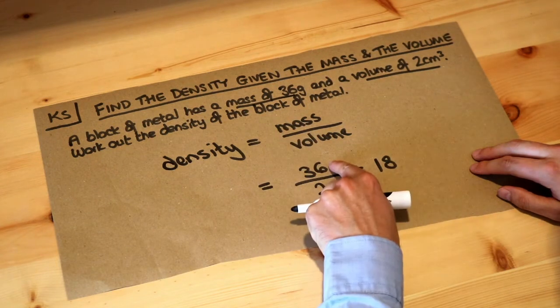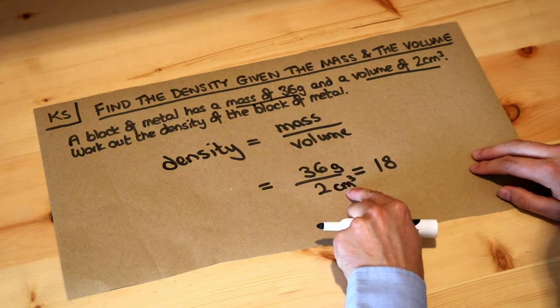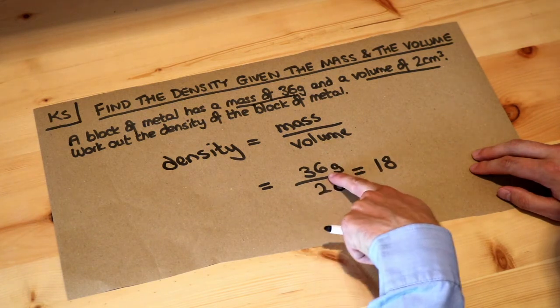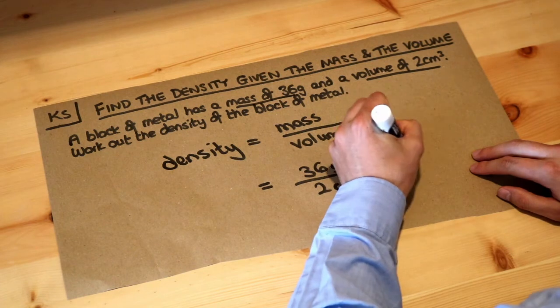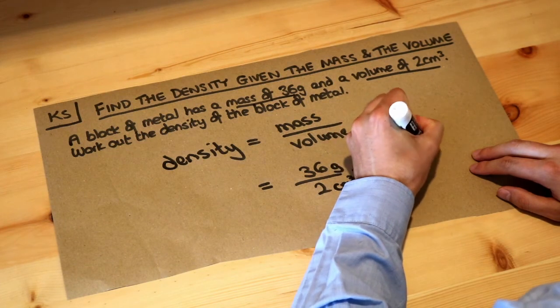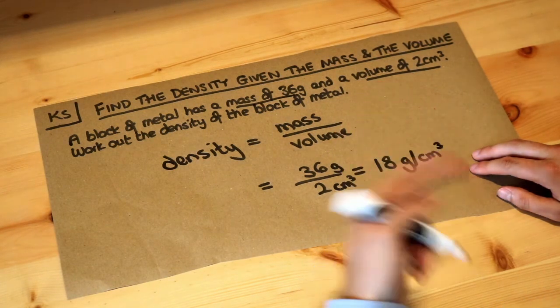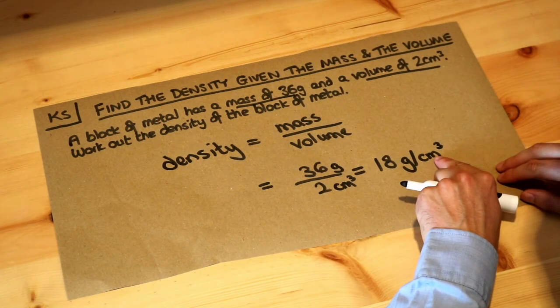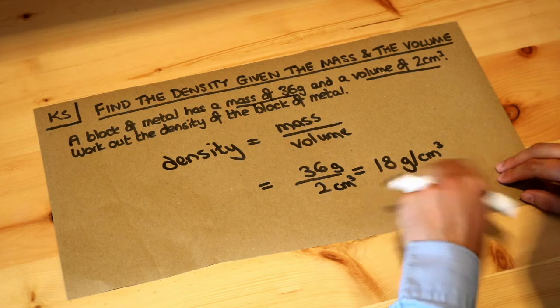So it's grams per centimeters cubed. So whenever you have a division of units you can say grams per centimeter cubed and we write it like this grams per centimeter cubed and what that means in words is that for each centimeter cubed we have, we have 18 grams of matter.